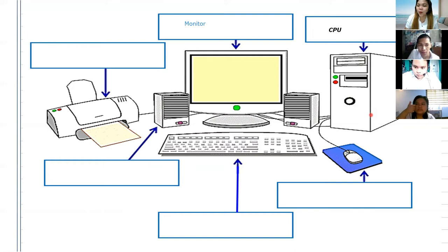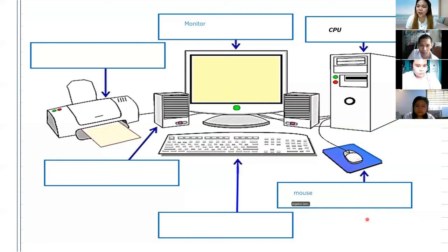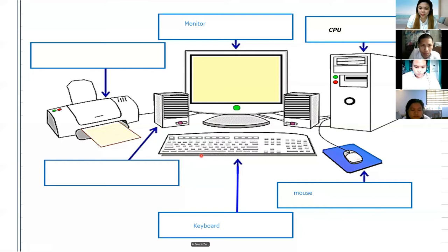Next, what's this? What part is this? Aika, what is this? Mouse. Correct — it is a computer mouse. And then next, Alfrancis, this one. What part of the computer is this? Enzo, is the answer of Alfrancis correct? It is a keyboard.